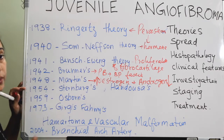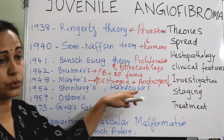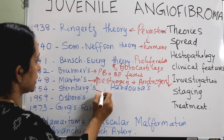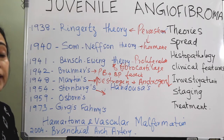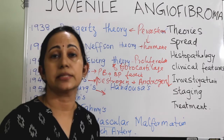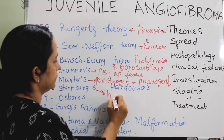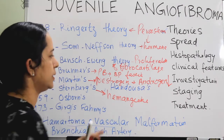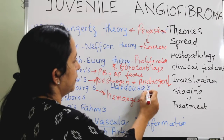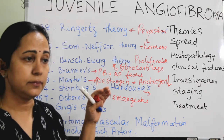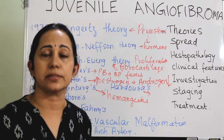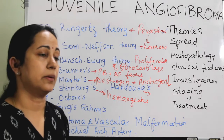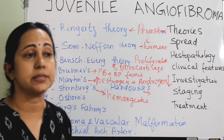In 1954, two theories were proposed. Sternberg's theory tells us that JNAs are nothing but hemangiomas arising from the skull base. Handoosa's theory proposes that JNA is a true neoplasm arising from the periosteum of the basiocciput — again emphasizing the role of periosteum.